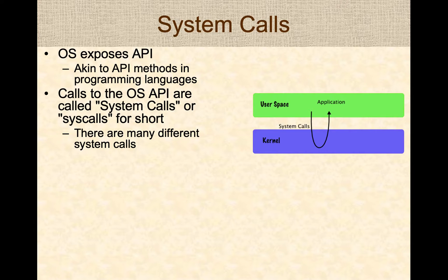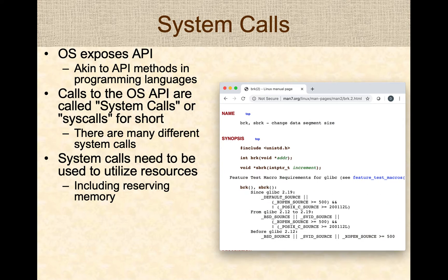Typically, these system calls go from the application running in user space into the kernel — the operating system kernel. In kernel space, the kernel performs some operation and returns the result to the application. There are many different system calls; you need to use system calls to utilize any resources. For example, if you want to allocate memory, in Linux it internally calls the brk or sbrk system call to allocate or free memory. Similarly, to open or create a file, you call the open system call. Changing user IDs or loading processes for different users is accomplished through the setUID system call.